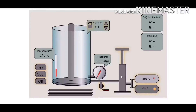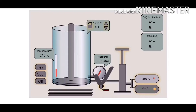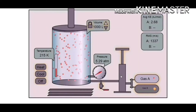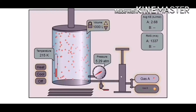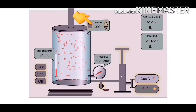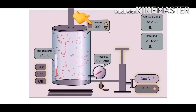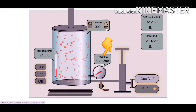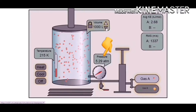Let us start with the simulation. Let's get to know first what's in here. Here, we have a gas container, an air pump, a barometer that records the amount of pressure, and a thermometer that will measure the amount of temperature. In this setup, gas molecules occupy 1,000 units of volume, and the pressure inside the container is 5.29 atm at a constant temperature.